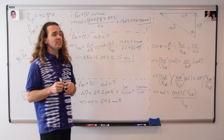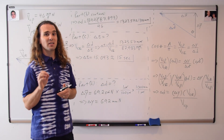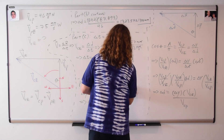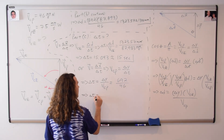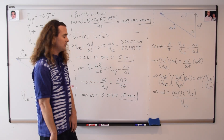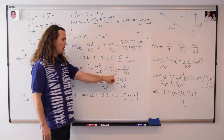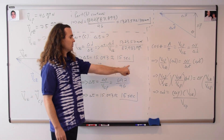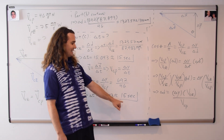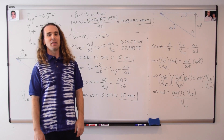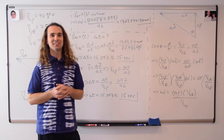Notice that it doesn't actually matter which side of the triangles you choose to use, as long as you use the same side of each triangle. We could choose the vertical sides and end up with the velocity of the car with respect to the paper equal to the displacement in the y direction divided by the change in time — and you get the exact same time. That completes the problem. Thank you very much for learning with me today.